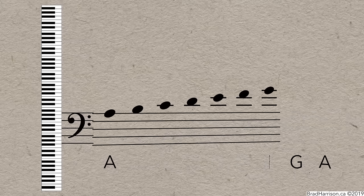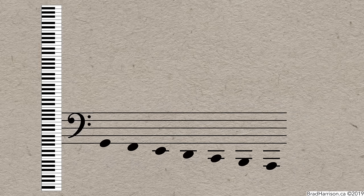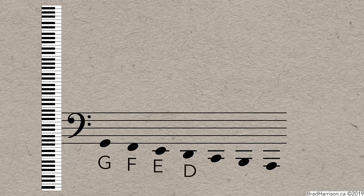To go higher, we just add more ledger lines above the staff, following the musical alphabet forwards. And, to go lower, we add ledger lines below the staff, and follow the musical alphabet backwards.